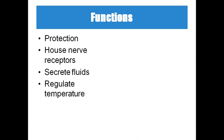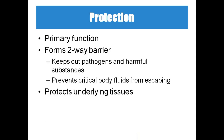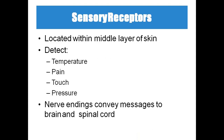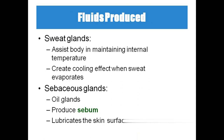Skin regulates temperature through shivering and sweat production. It forms a two-way barrier — content should not enter from outside to inside or from inside to outside the body. It also protects underlying tissues: bones and muscles are protected by the skin. The middle layer contains sensory receptors that detect temperature, touch, pain, and pressure, and conveys messages to the brain and spinal cord.